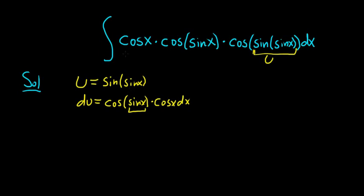And fortunately for us, this is precisely what appears in the integrand. We have cosine of sine of x times cosine of x. That's exactly what we have. So this purple piece is du.